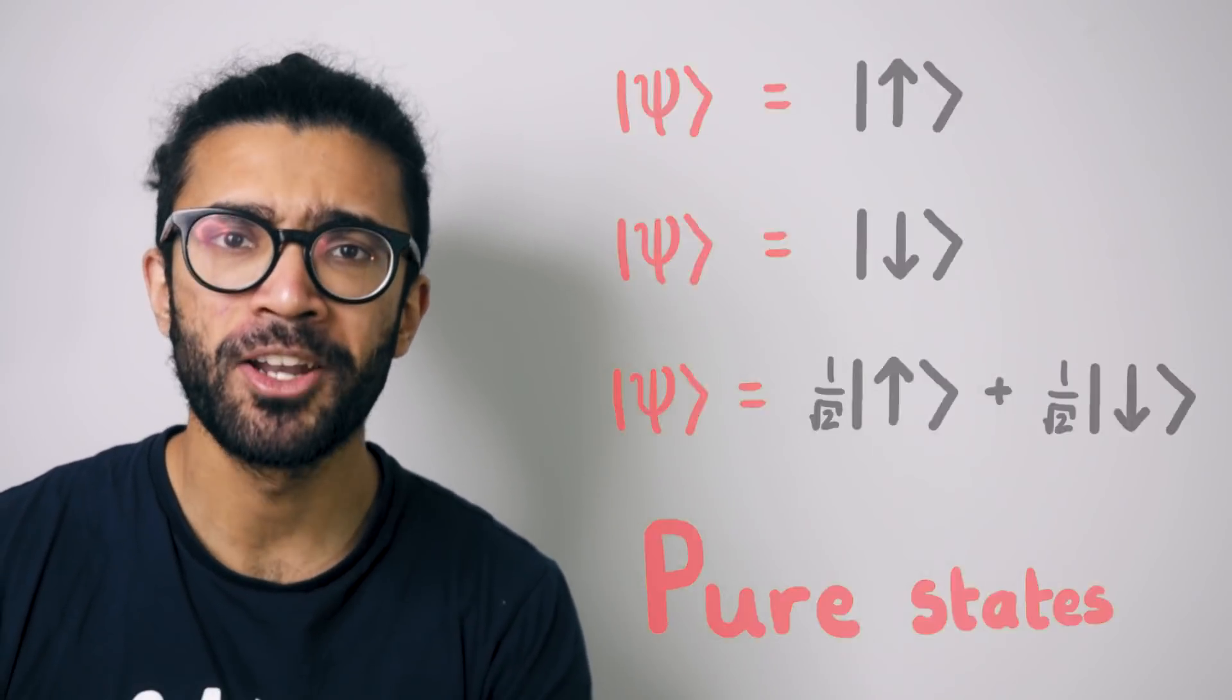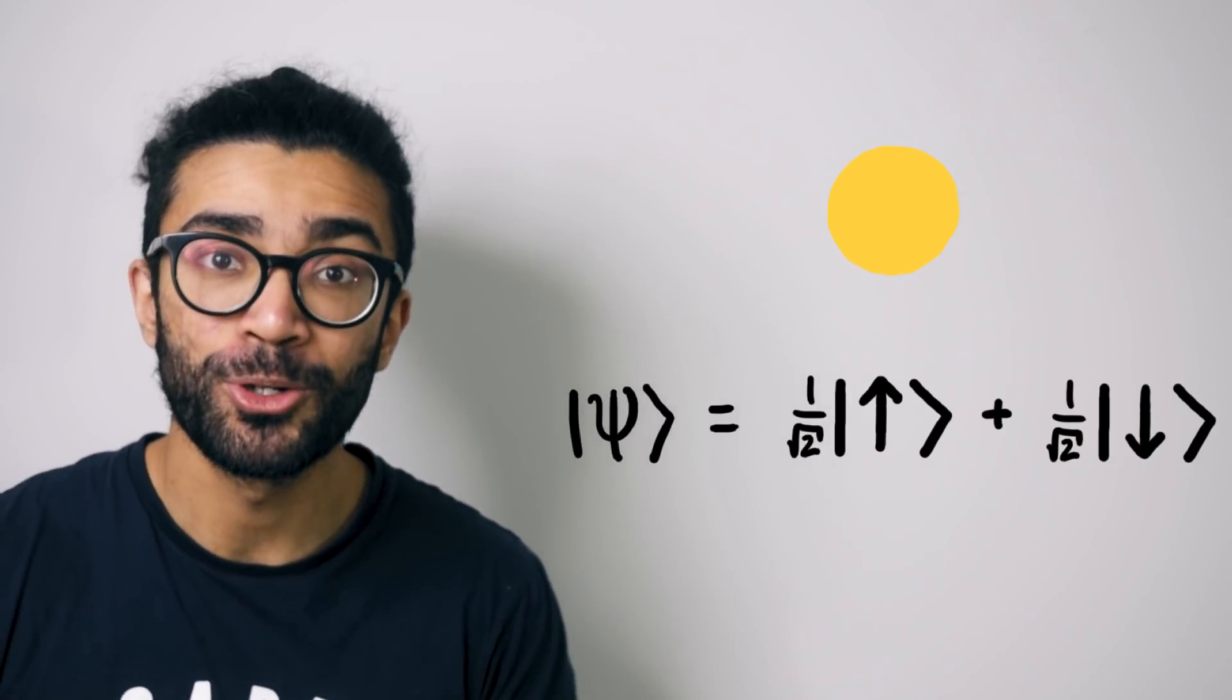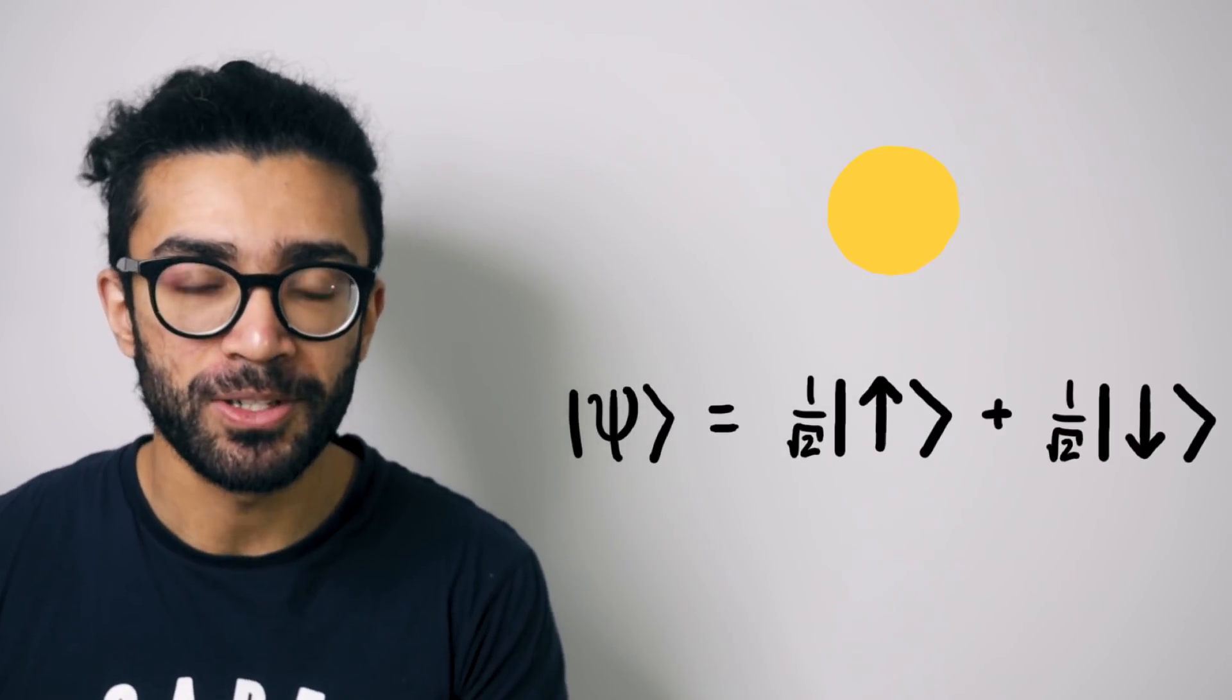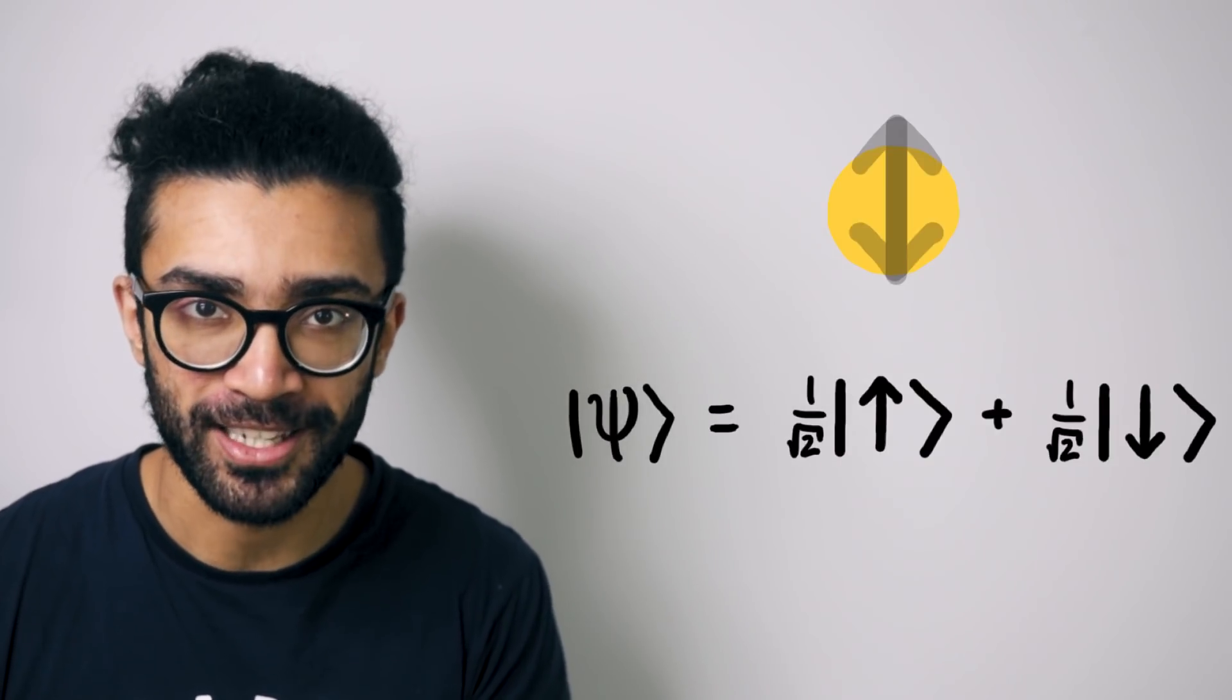But let's now take a look at another kind of quantum state, a mixed state. In my opinion the easiest way to do this is to contrast a pure state and a mixed state. This pure state, for example, we saw earlier represents a superposition, a sort of blend of the spin up and the spin down state.